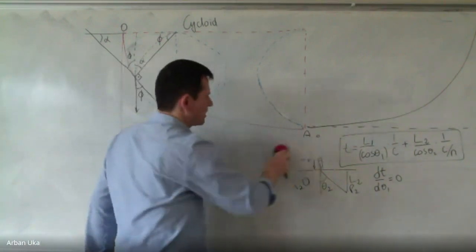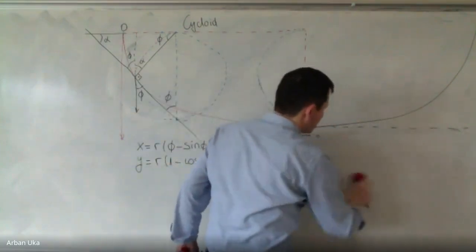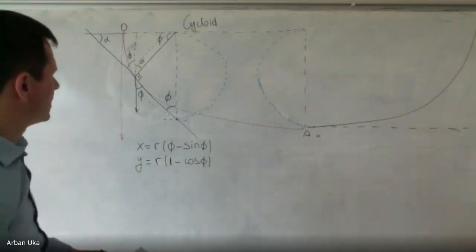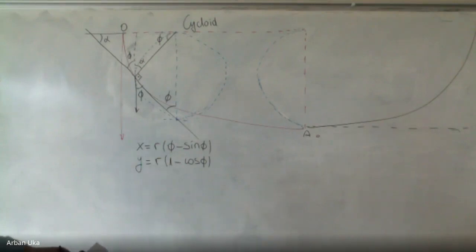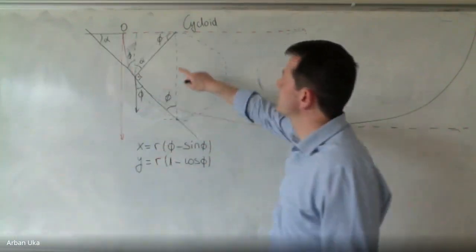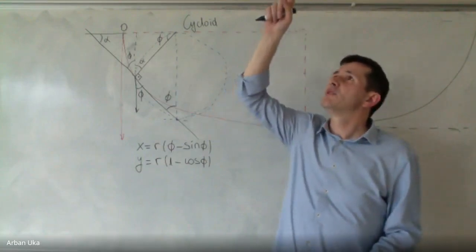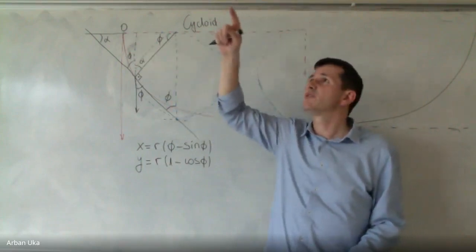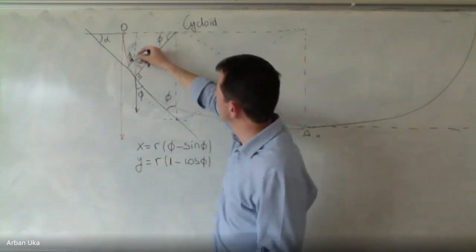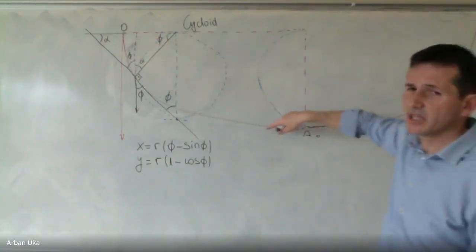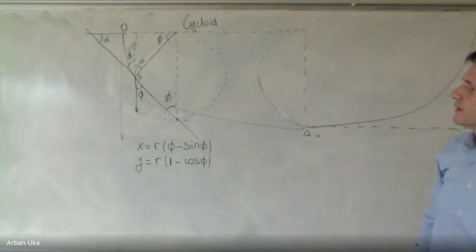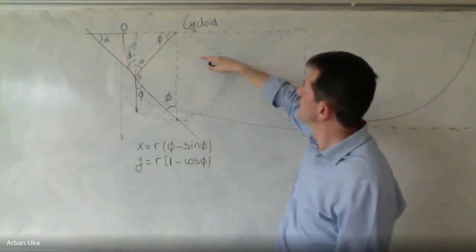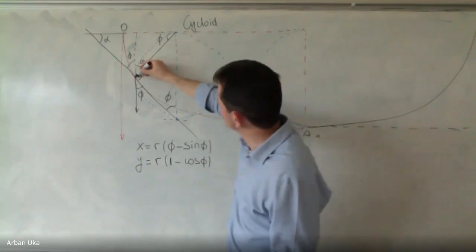The answer was provided by many mathematicians. Newton submitted his solution with no name on it, and everybody knew it was Newton based on the originality of the answer. The solution involves imagining a circle stuck on the ceiling that rotates — a point fixed on the circle as it rolls along the ceiling leaves a trail, and this trail is the equation of the cycloid.